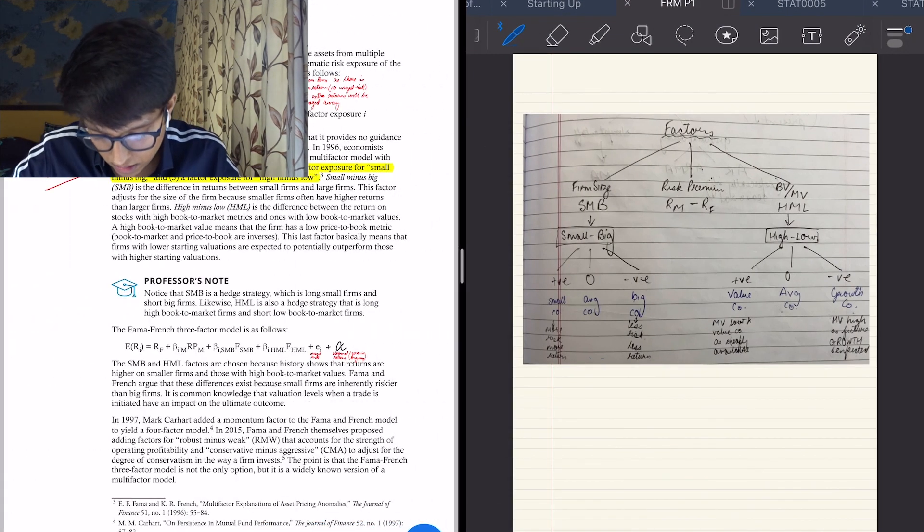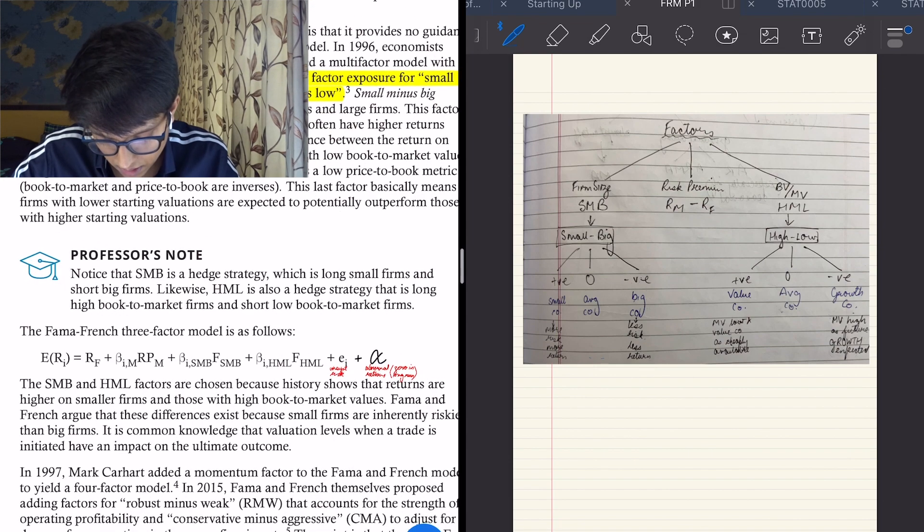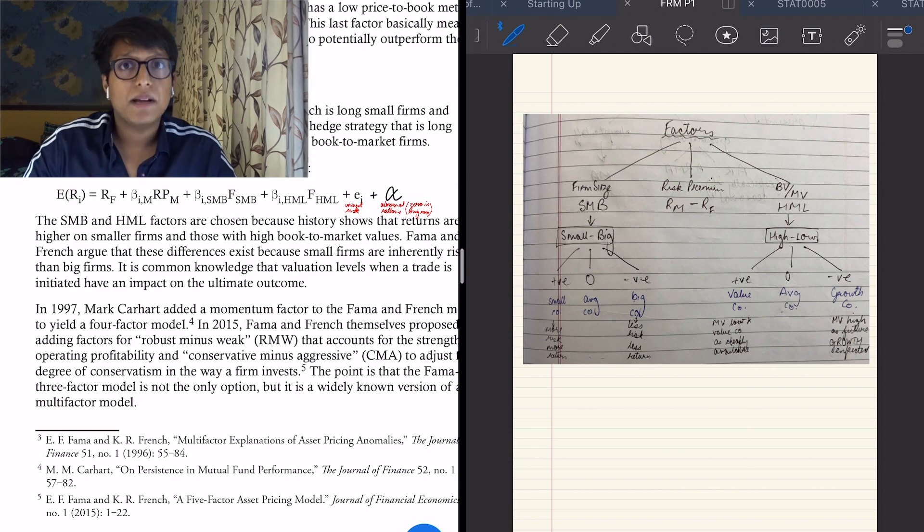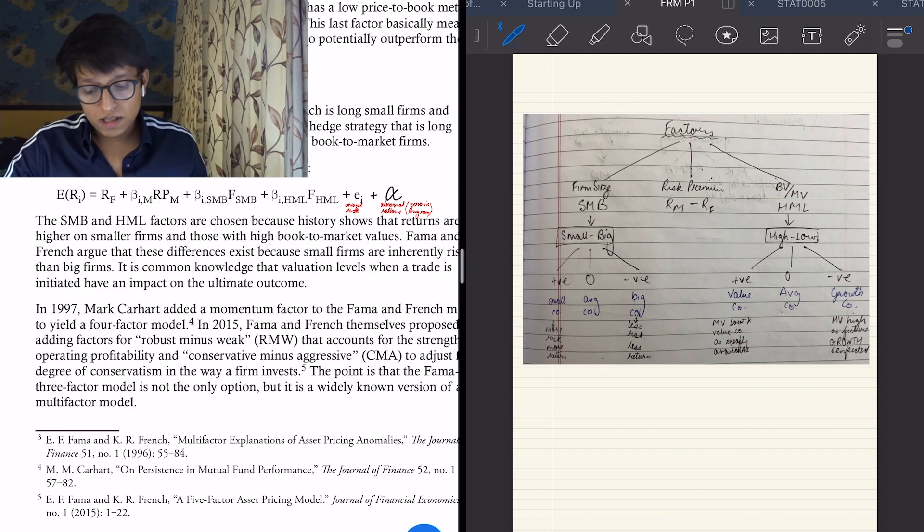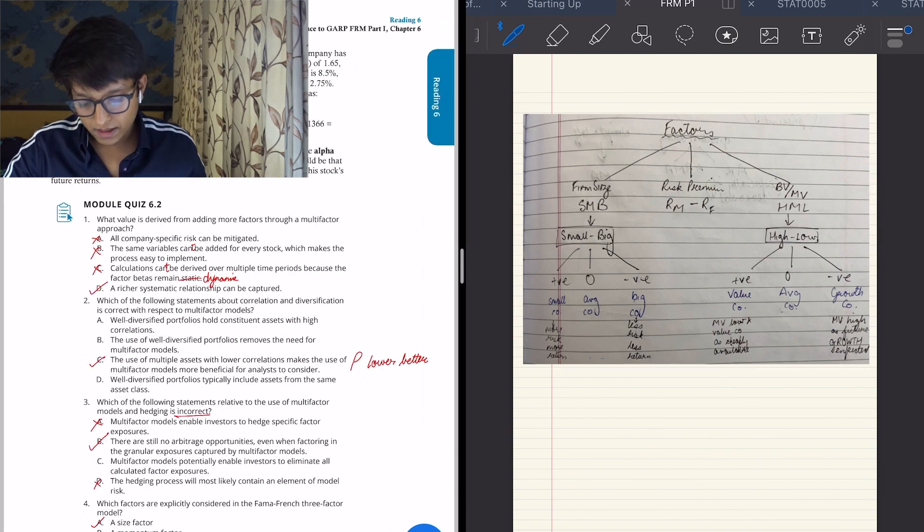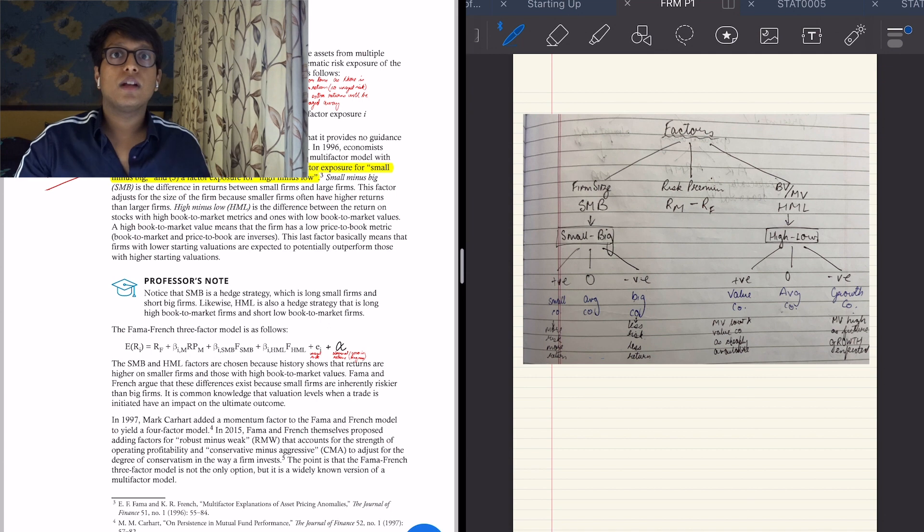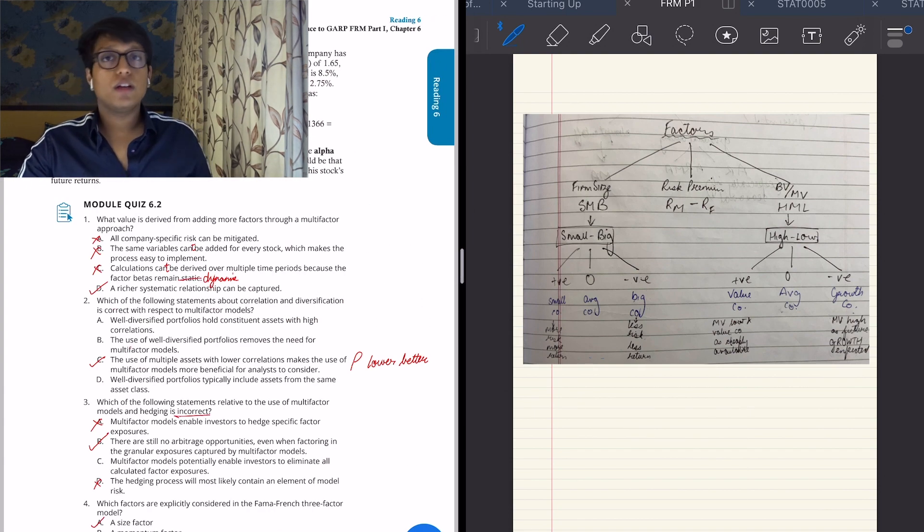There might be other additions to this: robust minus weak, conservative minus aggressive. Just read through it, nothing much to explain. Just one addition that we had been taught was a momentum factor, a fourth factor called momentum, which was very important—that if the stock has been increasing, it usually should continue to increase, or if it has been falling, it should continue to fall. That was a fourth important factor that was considered. This was the crux of this chapter. Just go through it once, nothing much to see. Just remember the small minus big and book value or market value thing—if it is a value stock or growth stock, what will happen—and just see a numerical over here, it'll be clear.